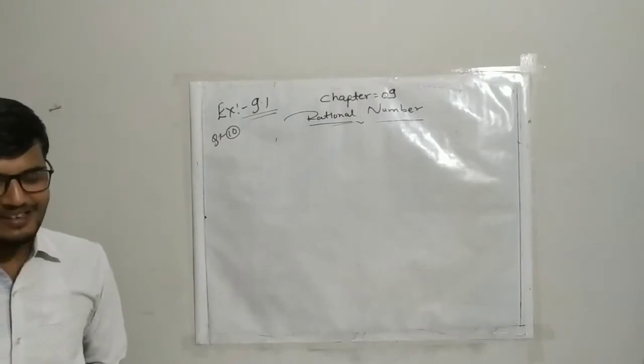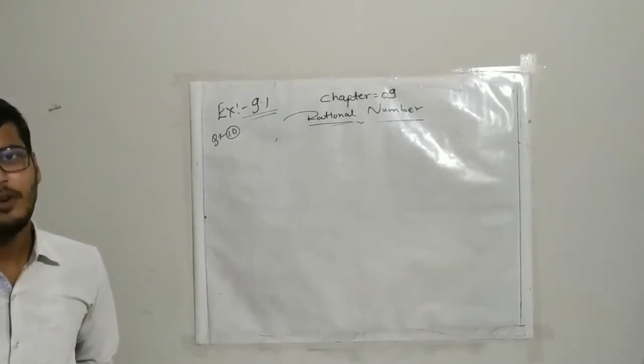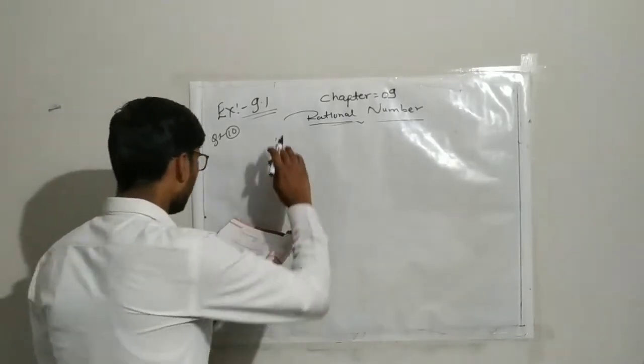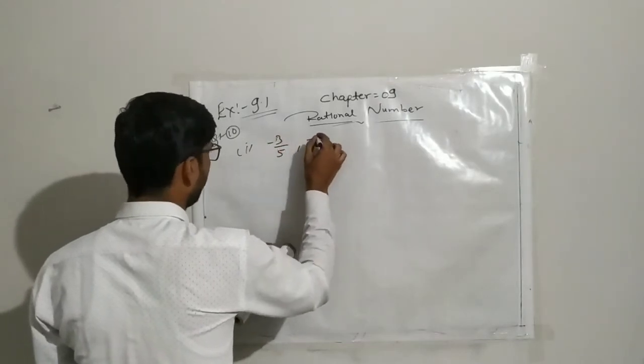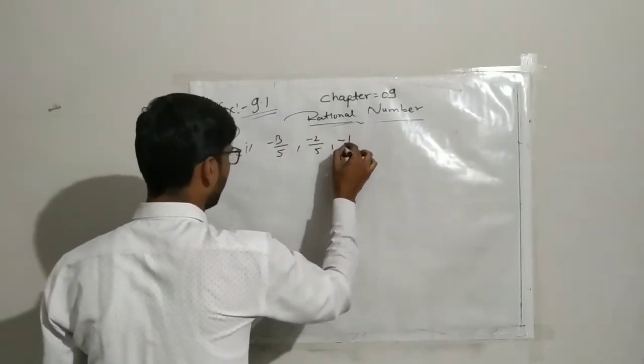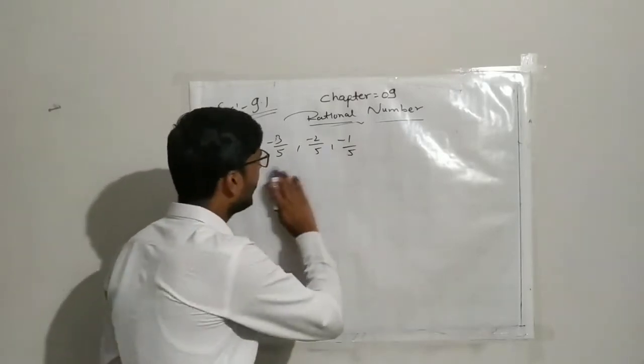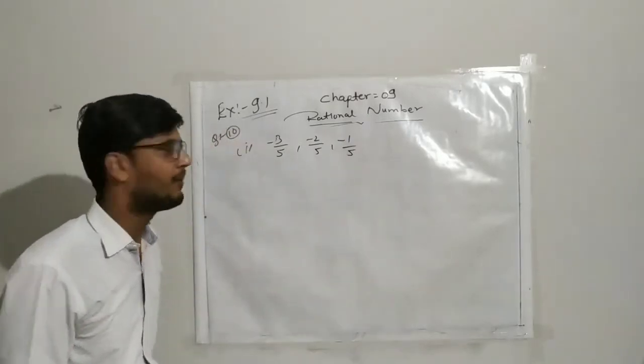You have to write the given rational numbers in ascending order, which means minimum to maximum number. So first question is: minus 3 upon 5, minus 2 upon 5, and minus 1 upon 5. In this case all denominators are same.